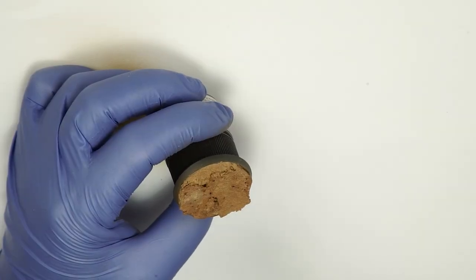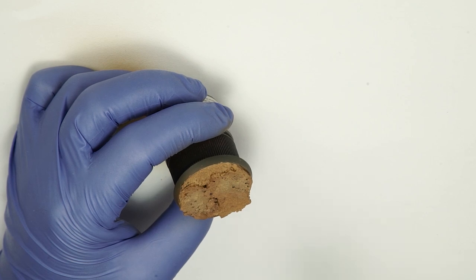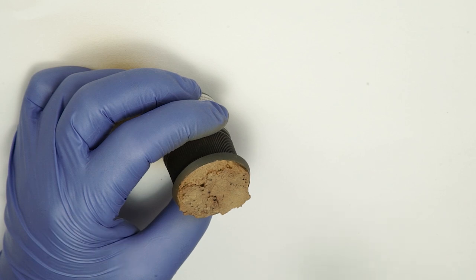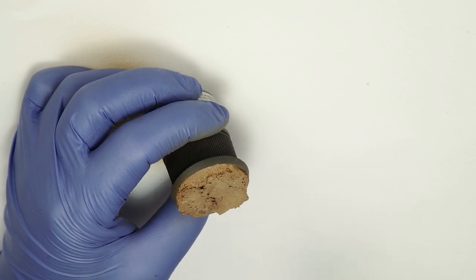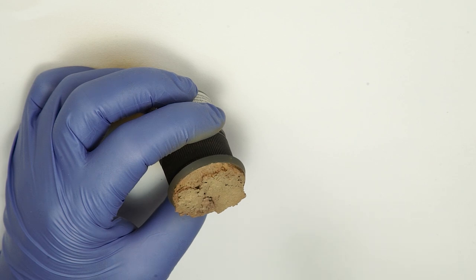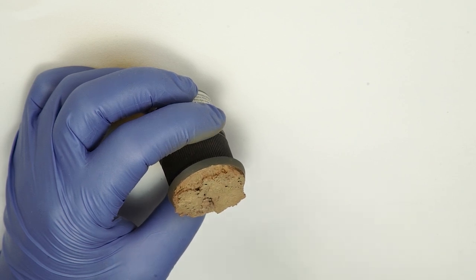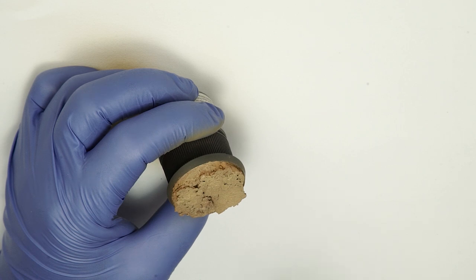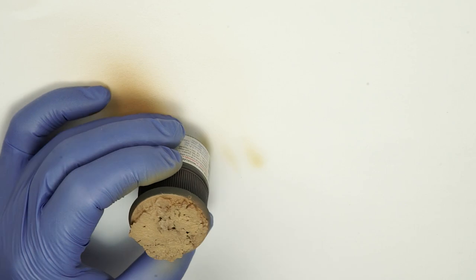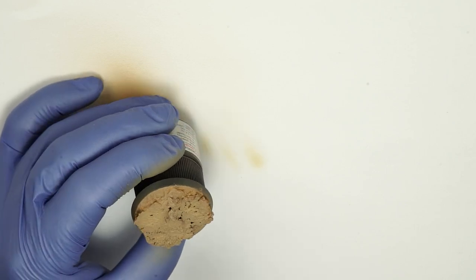The second coat of paint is a 50-50 mix of flat earth and dark sand. I will apply this mix mostly on the upper areas. And finally I will apply a coat of dark sand, again only on the upper areas.